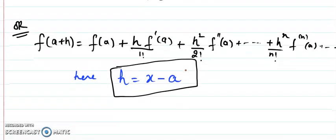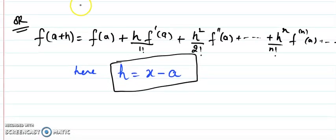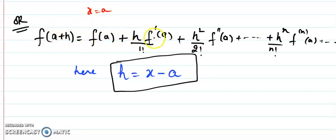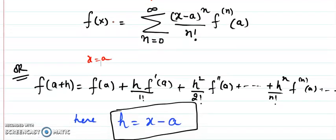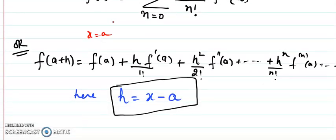There is another way of writing a Taylor series. If you want to find a Taylor series about a point a, we write a plus small h, and the expansion is f(a) plus h times f'(a) over 1 factorial, plus h squared times f''(a) over 2 factorial, and so on. Here h is nothing but x minus a, so when you replace h with x minus a, you get the same series.